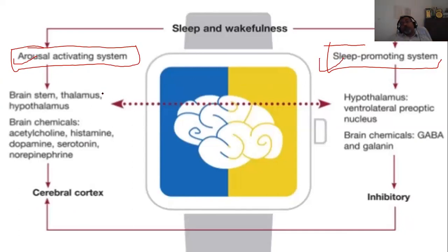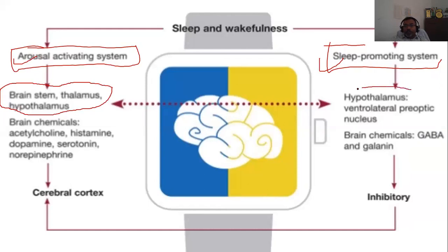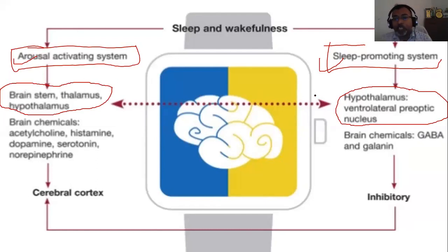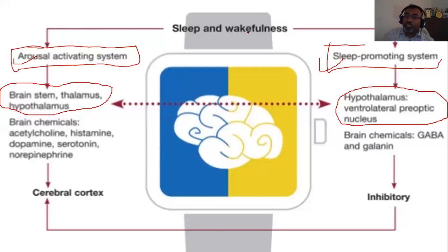Characteristic changes have been observed in different portions of the brain. The arousal activating system is present in the thalamus and hypothalamus, whereas the sleep-promoting system is located mainly in the hypothalamus. The suprachiasmatic nucleus manages the circadian rhythm. The arousal activating and sleep-promoting systems are present in different portions of the brain.